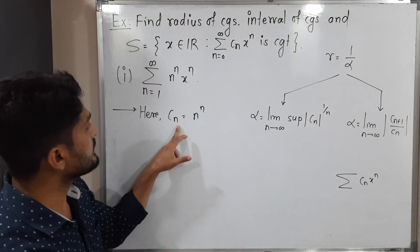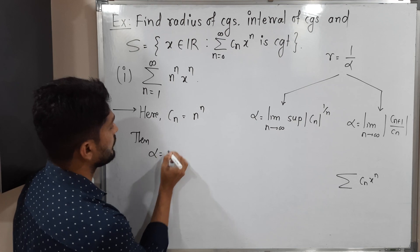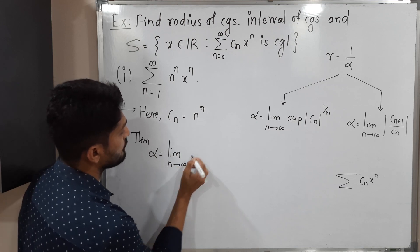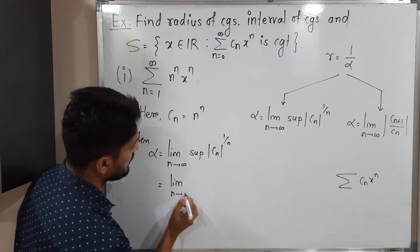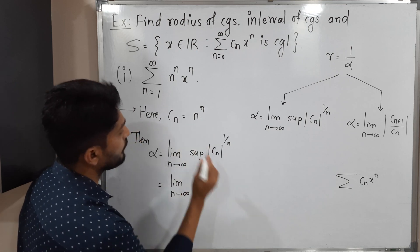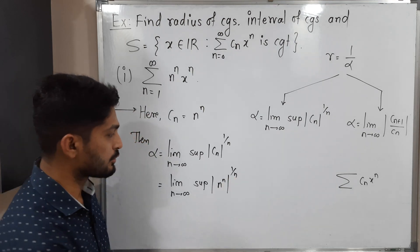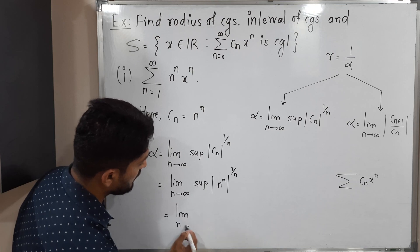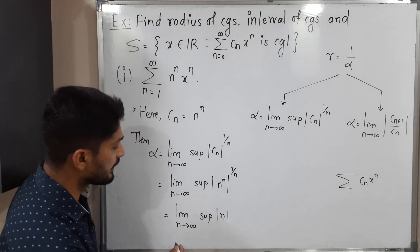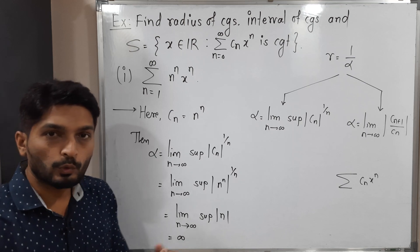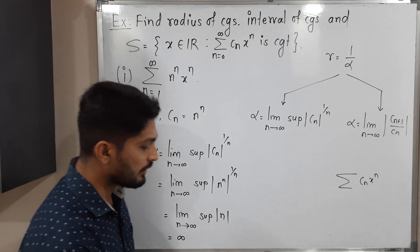In this example we have power n, so I will go for the first formula. Alpha is equal to limit n tends to infinity supremum of mod Cn raised to 1 by n. Putting the value of Cn, which is n raised to n, raised to 1 by n — the exponents n and 1 by n cancel each other, giving limit n tends to infinity supremum of mod n. When you apply the limit it goes to infinity since it's a monotonic increasing sequence. So the value of alpha is infinity.